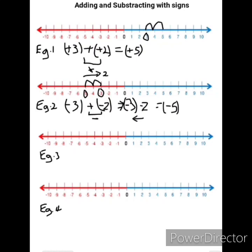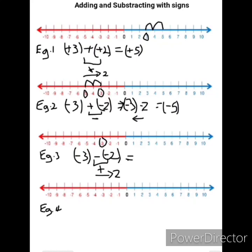Moving on to example 3: we have a value of negative 3 minus negative 2. We now have two negative signs together, so we consider our sign rule — a negative multiplied by a negative gives us a positive. Rewriting this, we have negative 3 plus 2. The plus indicates we need to go to the right, and the 2 means we go two places. Starting on negative 3 on the number line and moving two places to the right, our answer is negative 1.